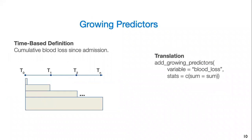Finally, we have growing predictors, which essentially start at the point of the first prediction, and then they accumulate over the course of, for example, a hospitalization for every new prediction. In this example, we're looking at cumulative blood loss since admission, considering T0 as admission, we're looking at the variable blood loss, and then we're looking at sum as the summary statistic.